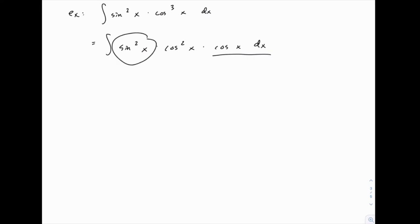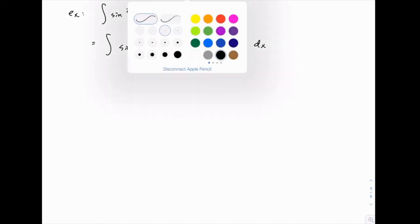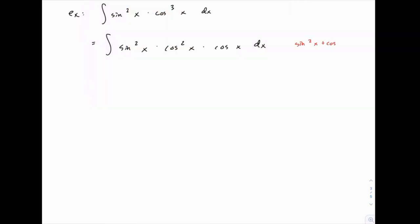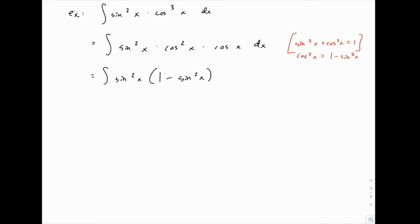This sine squared part is okay, but the cosine squared part we still need to deal with and rewrite in terms of sine of x. We remember that sine squared of x plus cosine squared of x equals one, which means cosine squared equals one minus sine squared. So we have sine squared of x times one minus sine squared of x times cosine of x dx. At this point we can define our u substitution, with u equal to sine of x and du equal to cosine of x dx.